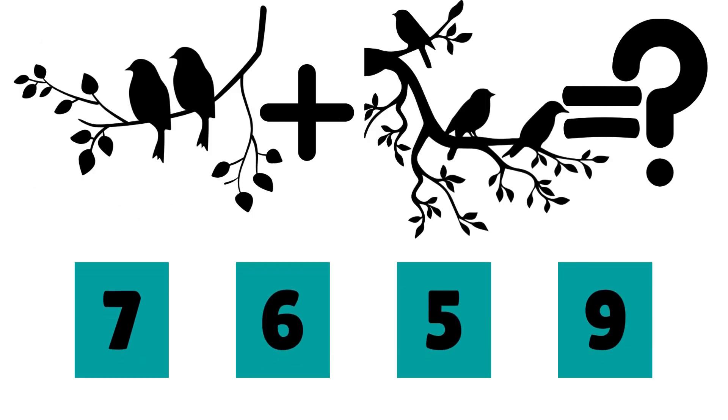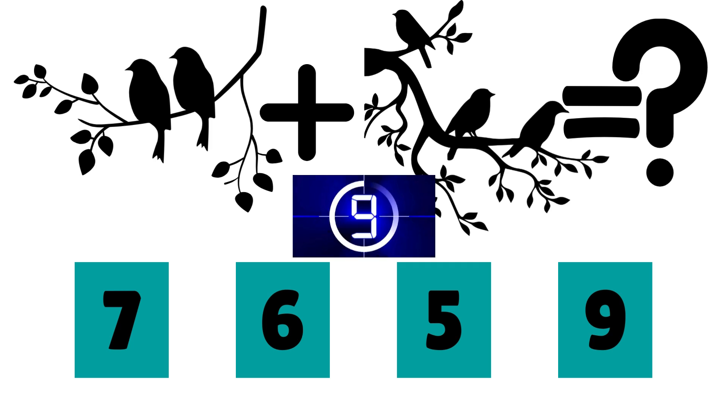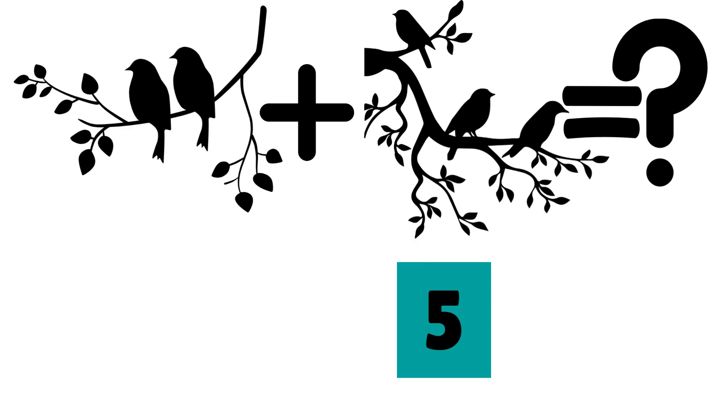There are two birds on one branch and three birds on another branch. How many birds are there all together? Correct! The answer is five. Two plus three is equal to five. Chirp chirp!